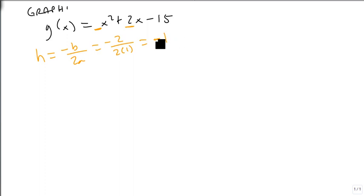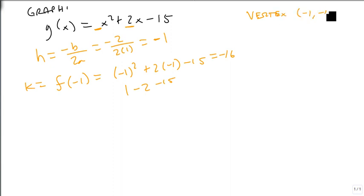Now that I know what h is, I find k by plugging h minus 1 in to get minus 1 squared plus 2 times minus 1 minus 15. Well, that's 1 minus 2 minus 15, which is minus 16. So my vertex is at minus 1 minus 16.